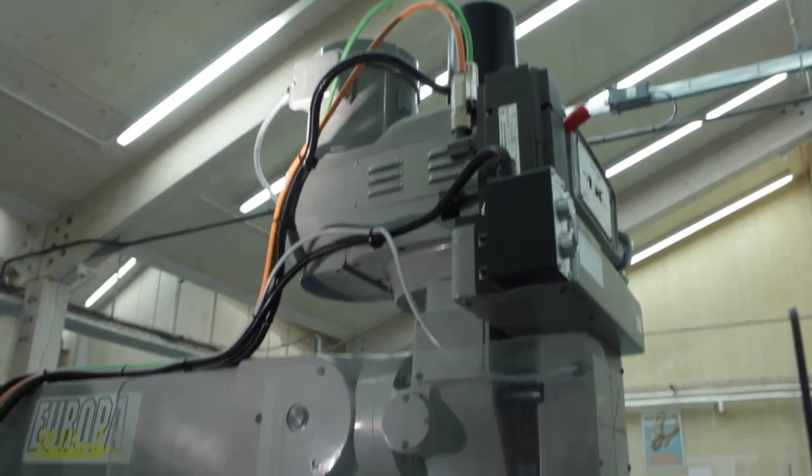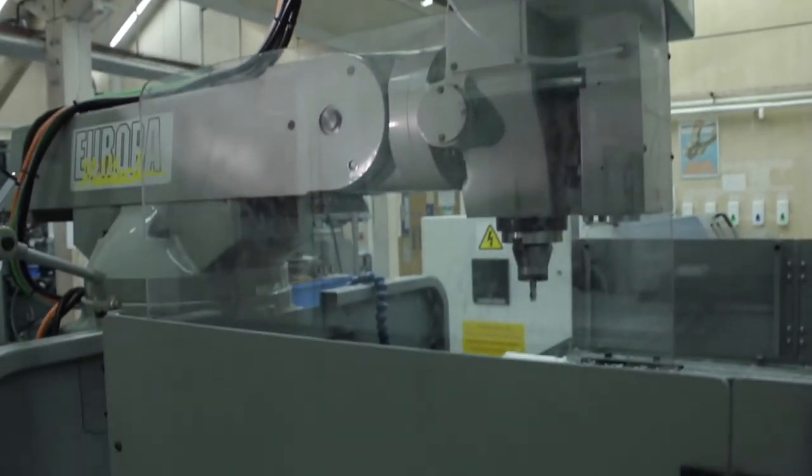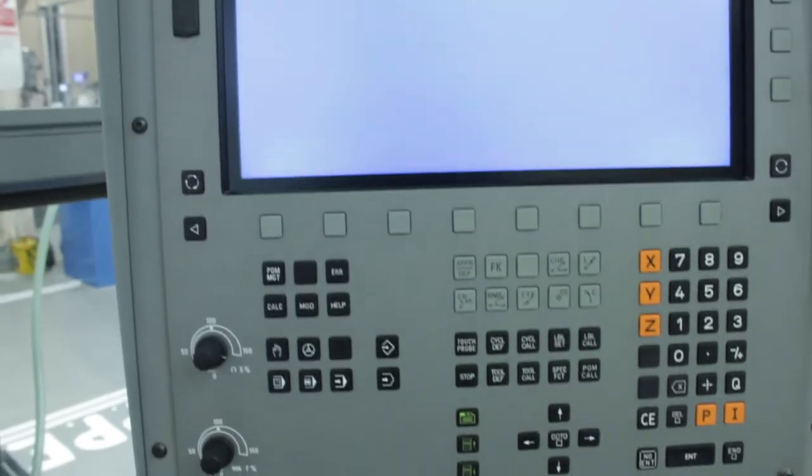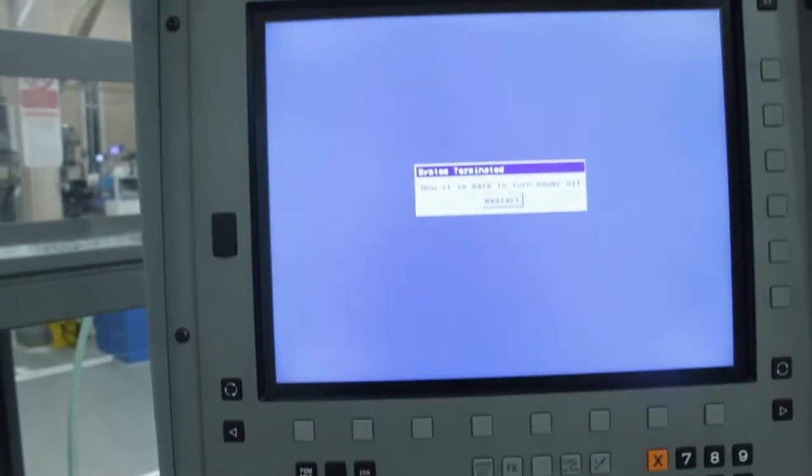This is the start-up procedure for a Heidenhain TNC320 control. This happens to be on our retrofitted milling machine but it could be on any given Heidenhain controlled mill.